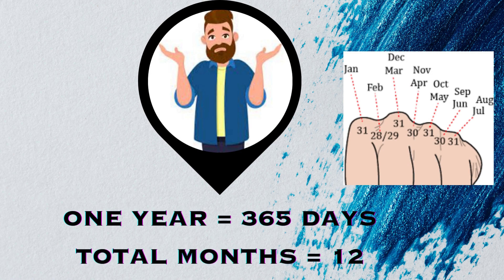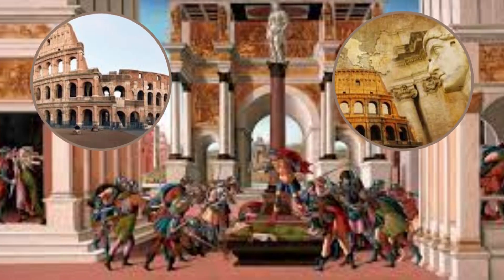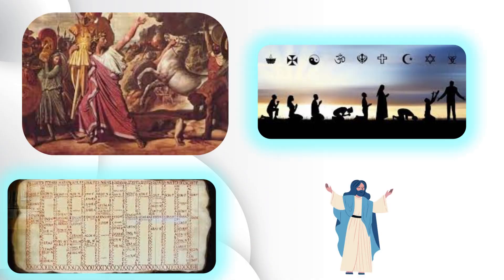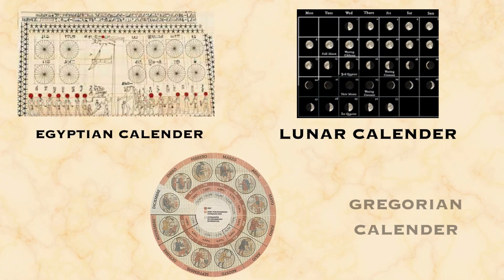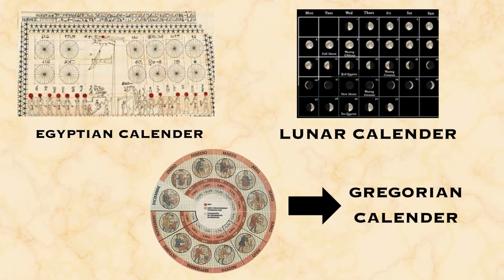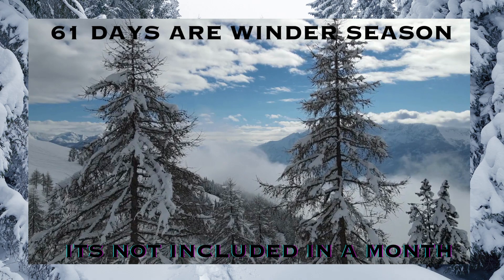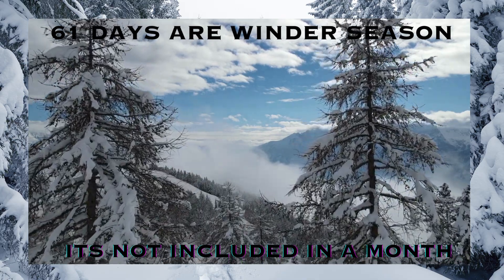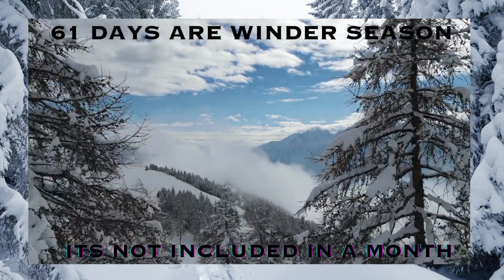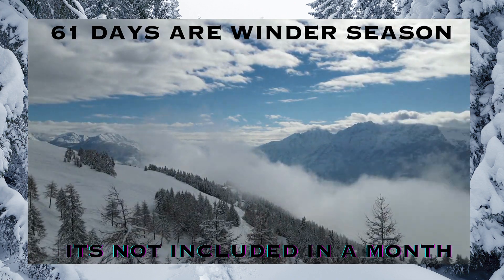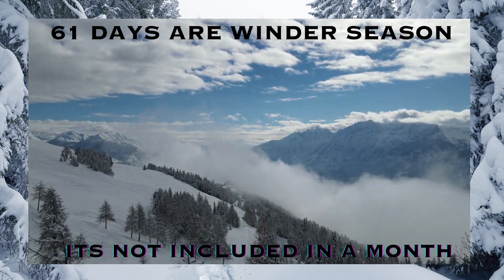We know that one year is 12 months. But if you look at the history of this, it is not a single ruling period. There are many calendars that are used. But the calendar used in the Roman period is significant.